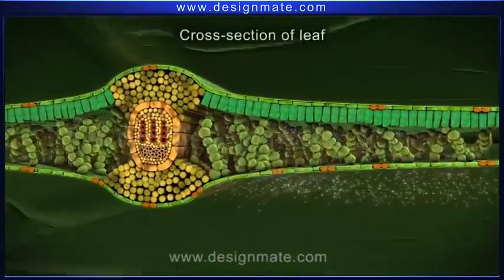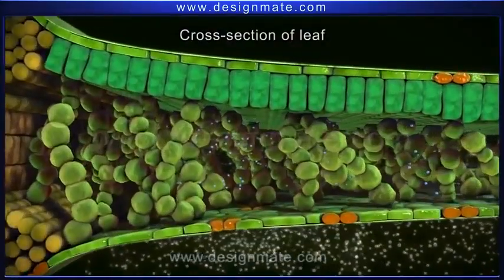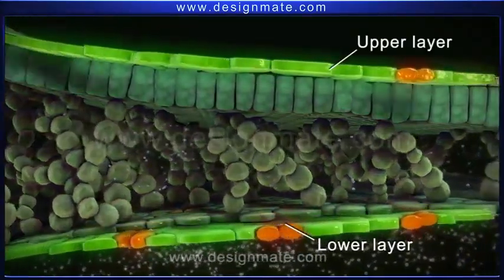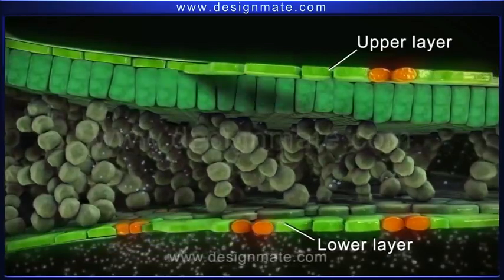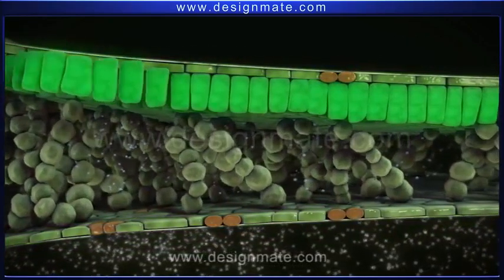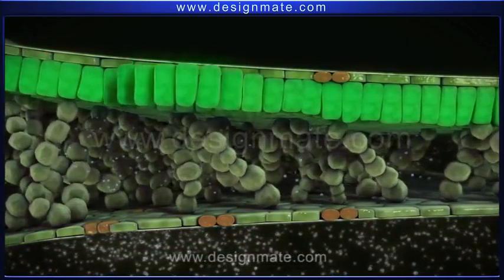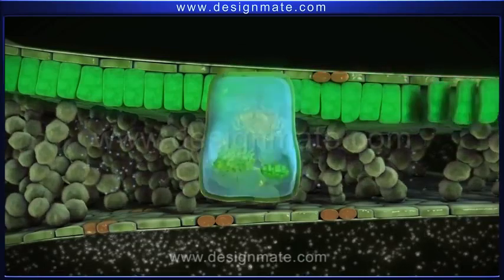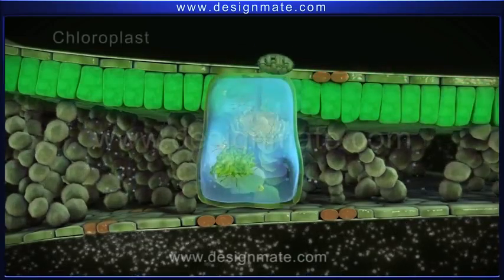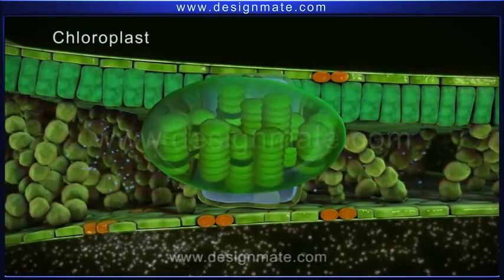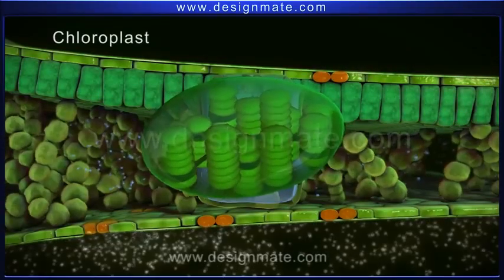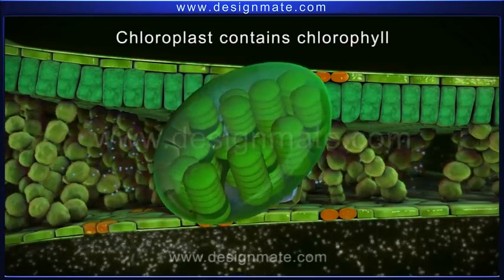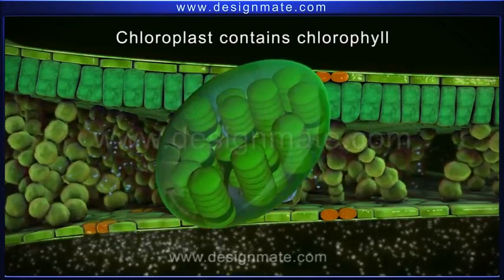A cross section of the leaf shows the upper and lower layers of cells, which are flat and irregular. Below the upper layer is a layer of tightly packed cells. These cells have specialized organelles called chloroplasts. Chloroplasts contain the pigment chlorophyll, which gives the green color to the leaf.